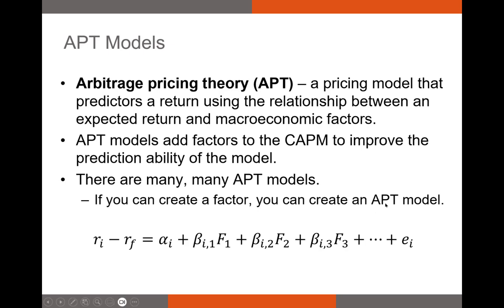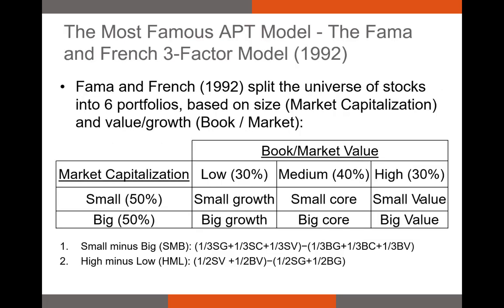One of the oldest and most famous APT models is the Fama and French three-factor model. Researchers Gene Fama and Ken French took variables already identified as anomalous and used them to construct two additional factors — the Small Minus Big (SMB) factor and the High Minus Low (HML) factor. They used the value factor and the size factor, sorting all stocks into one of six bins based on book-to-market ratio and market cap.